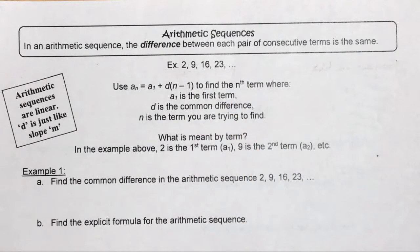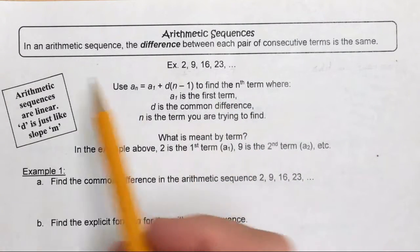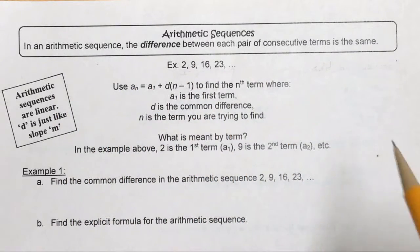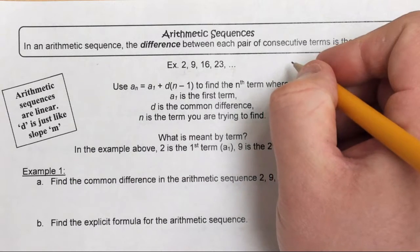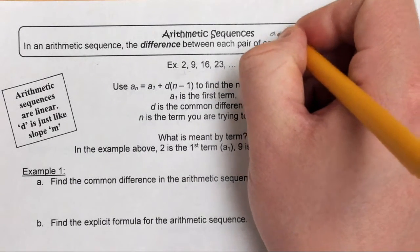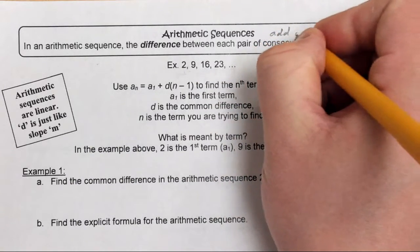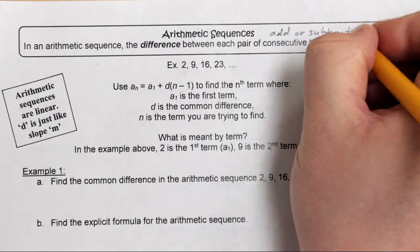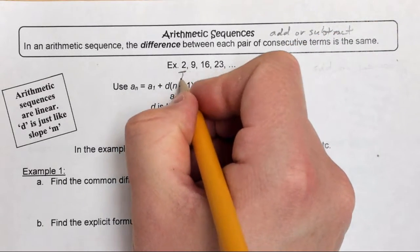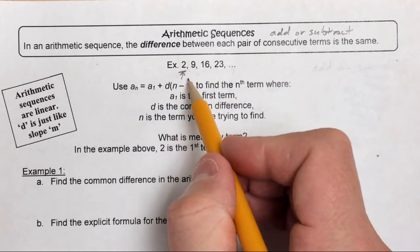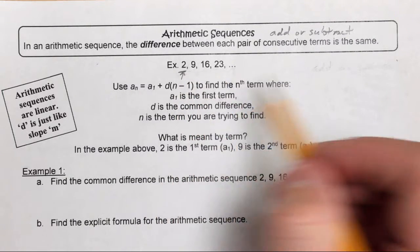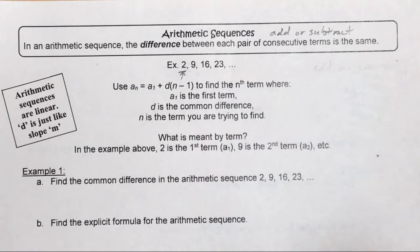This first part of the lesson is talking about arithmetic sequences. An arithmetic sequence is one where the difference between each pair of consecutive terms is the same. Whenever we're talking about arithmetic sequences, we're either going to add or subtract values from an initial value to get to the next term, and then apply that same pattern to get to the next term by either adding or subtracting.